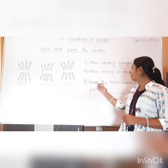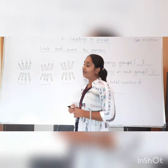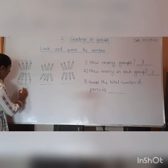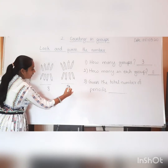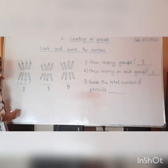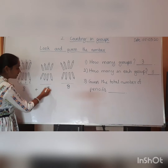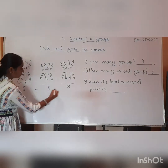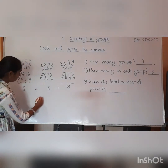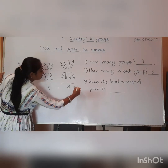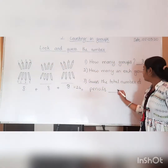Students, let's now answer the third question: guess the total number of pencils. Each group has eight pencils — first group, second group, and third group each have eight pencils. To find the total, we do addition. Eight plus eight is sixteen. Sixteen plus eight is twenty-four. We have a total of twenty-four pencils.